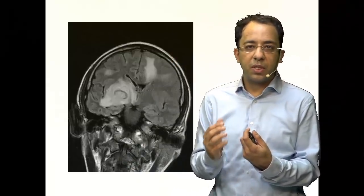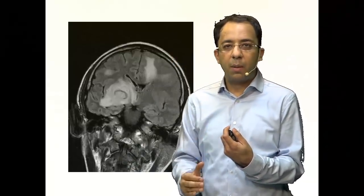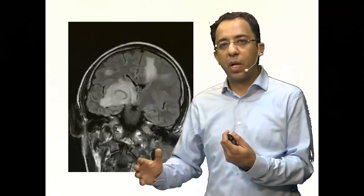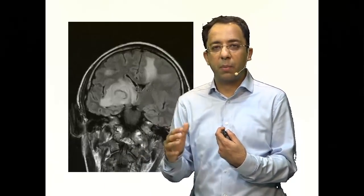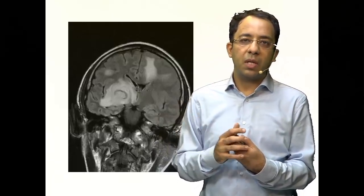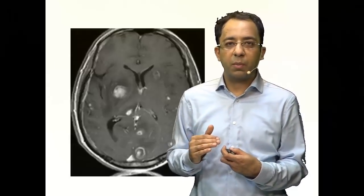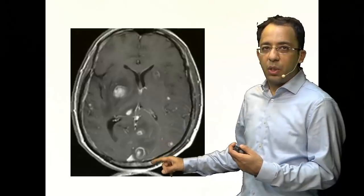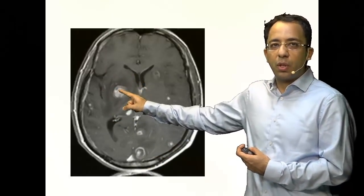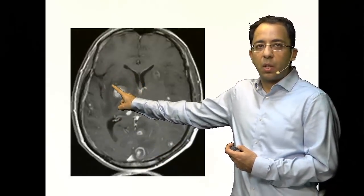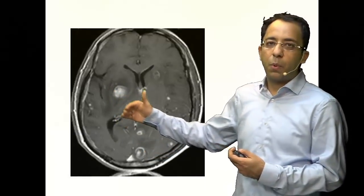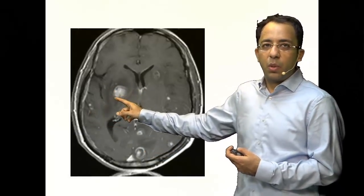Enhancement seen in a brain lesion indicates two things: vascularity and disruption of the blood-brain barrier. Both are typically seen in an inflammatory lesion. When IV contrast is given, all those areas where we saw edema are confirmed on the T1 post-gadolinium image.